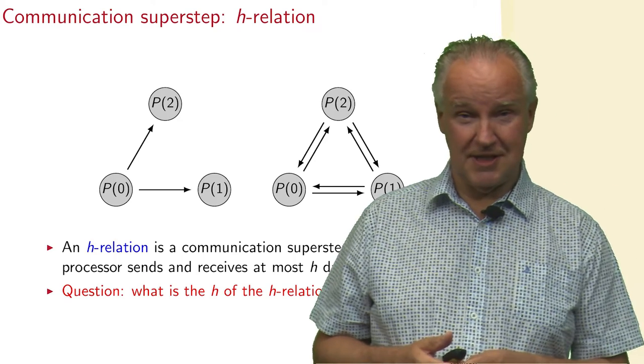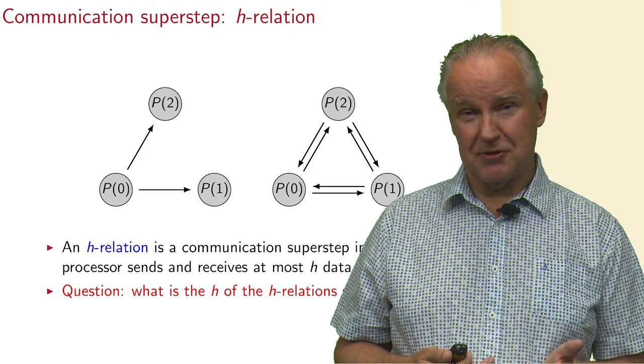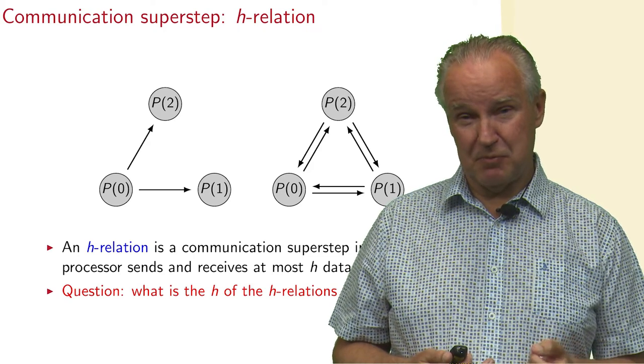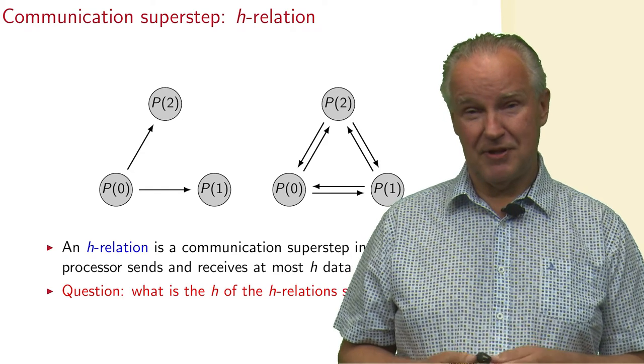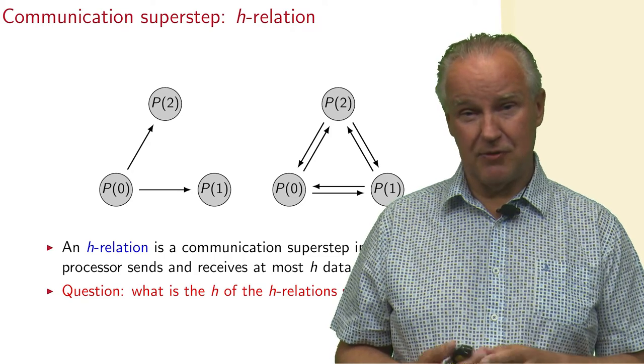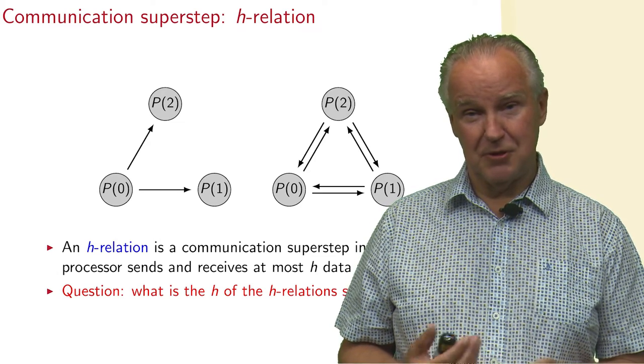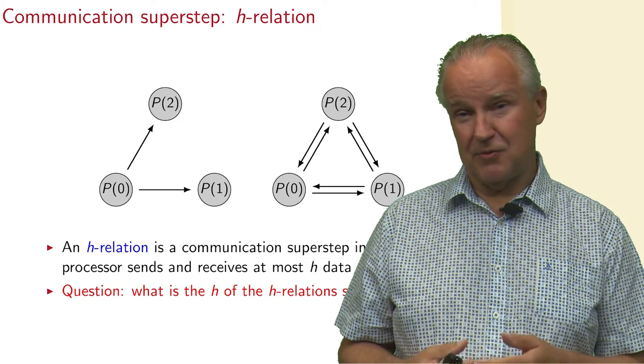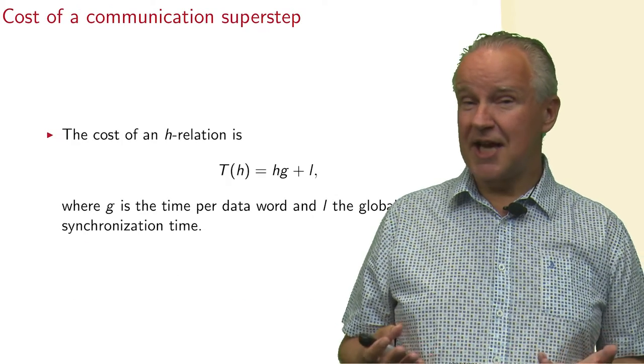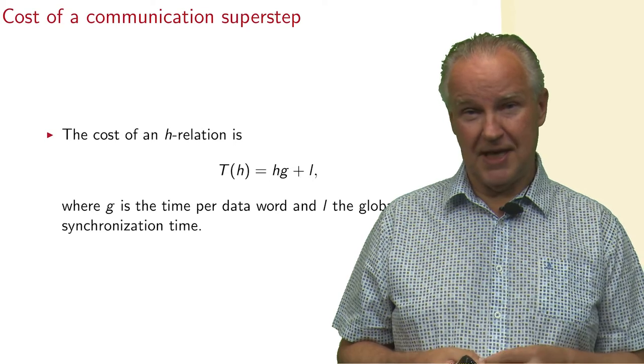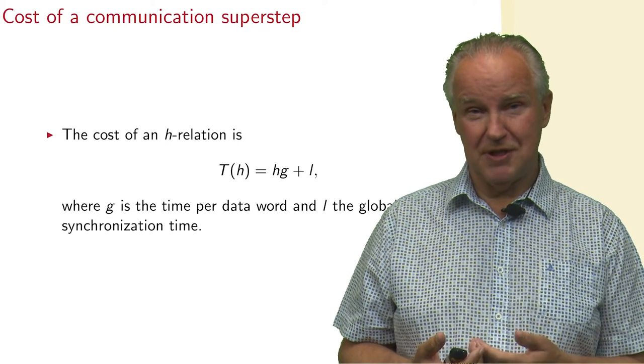Well, you may have thought about this. In both cases the h equals two, because what we saw on the left, every processor receives at most one element, but processor zero sends two elements, and that's the maximum number either sent or received. And with the picture on the right, we have that all three processors have a sending and receiving of a data word to each of the other processors. Everybody sends two, everybody receives two. So, we have two different patterns, but in both cases we have the same h. And this h determines the time that it takes to communicate. And we consider the time to be linear in the number of data words that are being sent or received. So, that number is H.